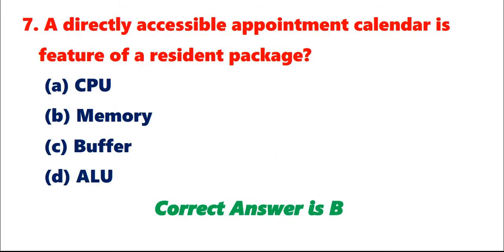Question 7: A directly accessible appointment calendar is a feature of a resident package A. CPU. B. Memory. C. Buffer. D. ALU. Correct answer is B.